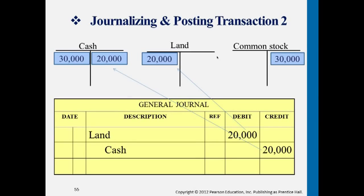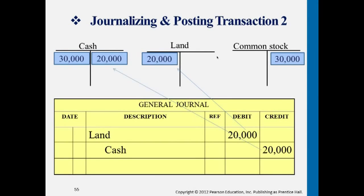The cash account is capturing the transactions: we increased cash $30,000 from common stock, and now we're reducing cash by $20,000. When you look at the T account for cash, the left side represents the corporation receiving $30,000, and the right side represents the corporation paying out $20,000 in exchange for something. Looking at the land account, we purchased land worth $20,000. Common stock shows we issued common stock and raised $30,000 in capital from the public.